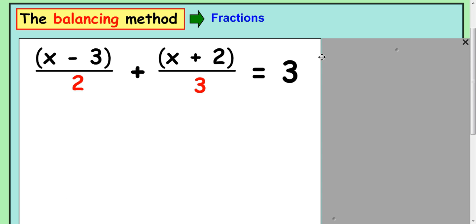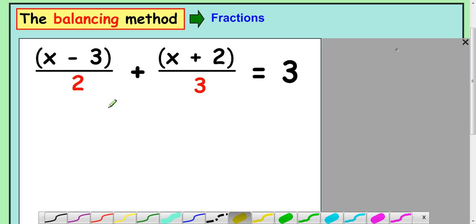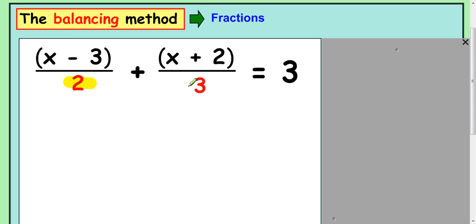The same rules apply generally with this to the ones previously. So as before we want to try and eliminate the fractions. So have a look at the denominators, the 2 and the 3. To eliminate this we need to multiply everything by the lowest common multiple, and the lowest common multiple of 2 and 3 is 6.